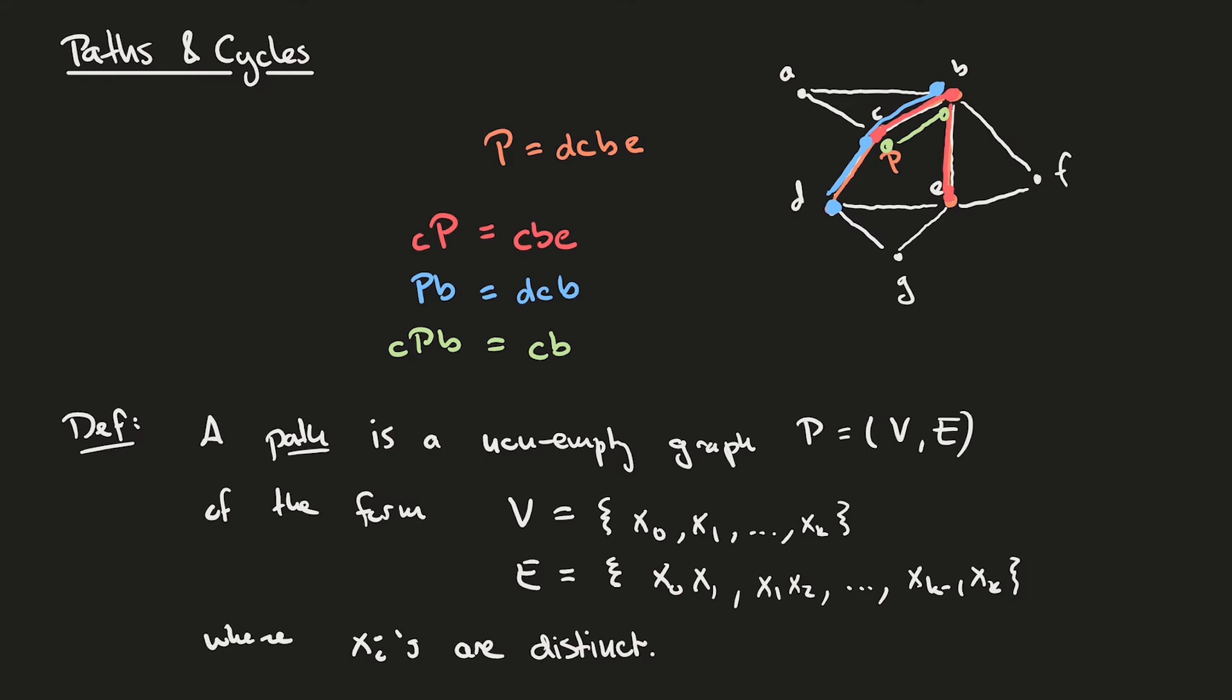Finally, it'll sometimes be useful to refer to the interior of a path, which means all of the vertices and edges in a path except for its ends, and we'll do so by using a circle above the path. So in our case, the interior of P would be the path made up by its interior vertices, which in this case would also be the path C, B. All of these notations might seem a little bit excessive at the moment, but I hope you'll see soon that when we want to concatenate different paths at different points, it'll become very useful to have a short notation for these types of objects.